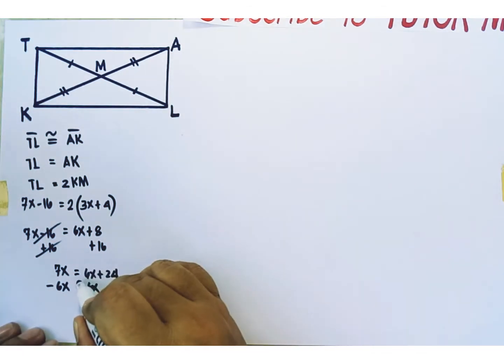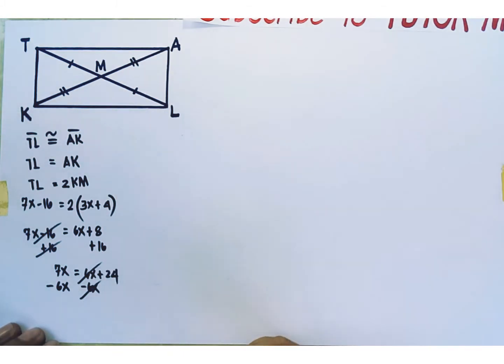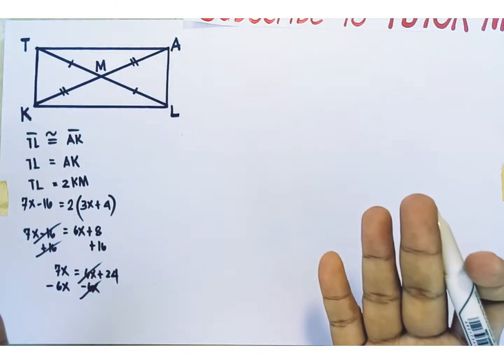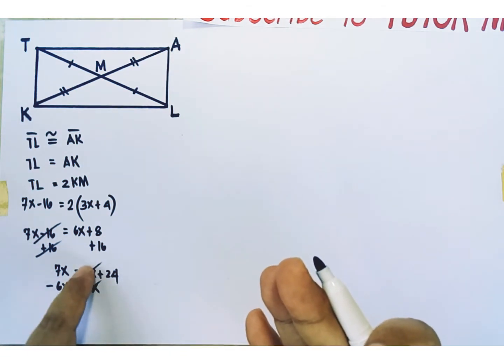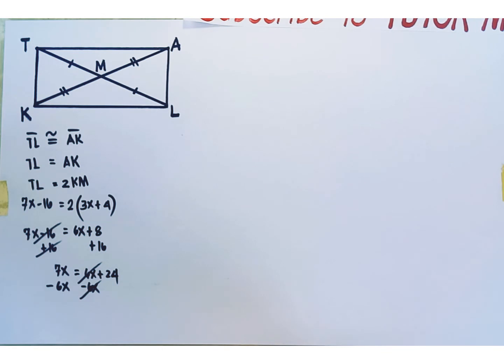Additive inverses cancel out each other on the right side of the equation. Or, when you subtract two equal numbers or two equal terms, the difference is always equal to 0. So, we cancel these two terms out. The right side of the equation becomes 24 only. While the left side becomes 7x minus 6x or x. This is the value of x.